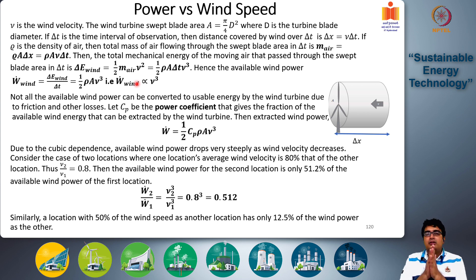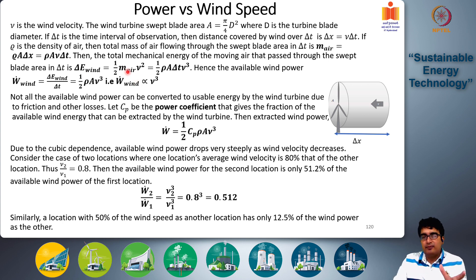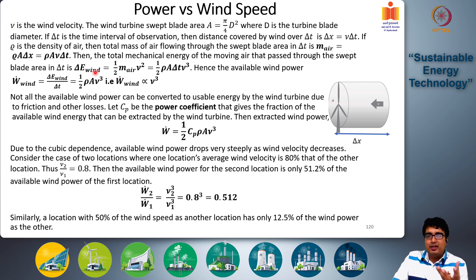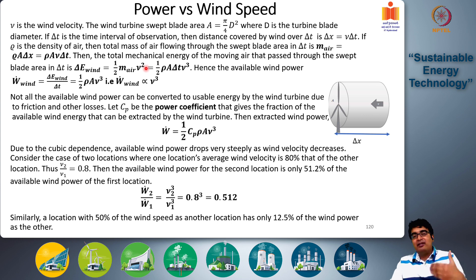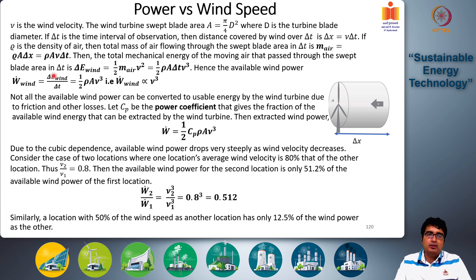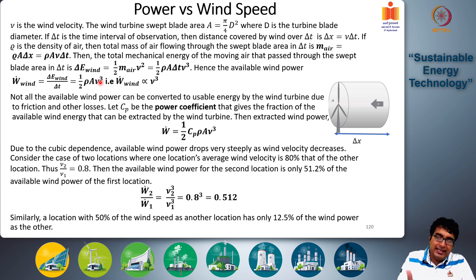The total mechanical energy of wind available over time Δt is one-half times m_air times v squared, which equals one-half times rho times A times Δt times v cubed. Therefore, the available wind power — total energy divided by total time — is: P = ½ρAv³.